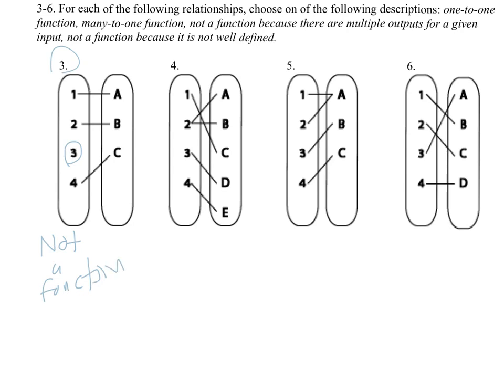If we look at example four, we're looking at is this a function, and here we notice that the input two has two different outputs. That's the other way that it could be not a function. So this one's also not a function. You want a function to clearly explain what the output should be, and this one is unclear. Should two go to A or should two go to B? That's not a function.